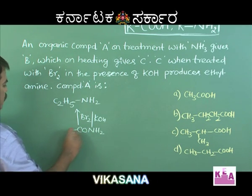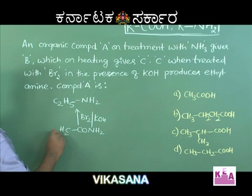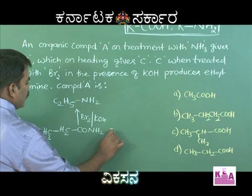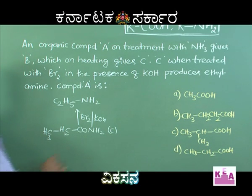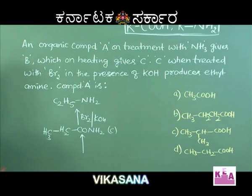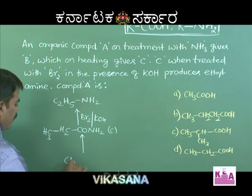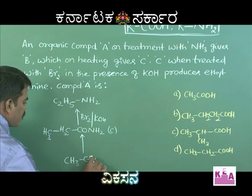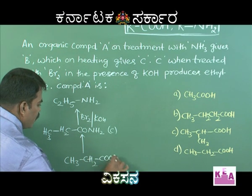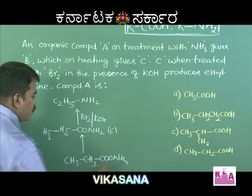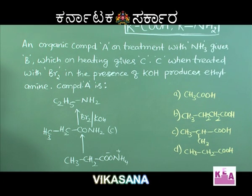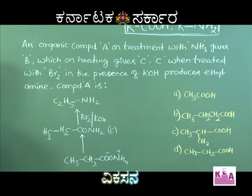Compound C is propanamide. This comes from compound B, which must be ammonium propanoate (CH₃CH₂COONH₄). Compound B is formed by adding ammonia to compound A, and on heating gives propanamide.